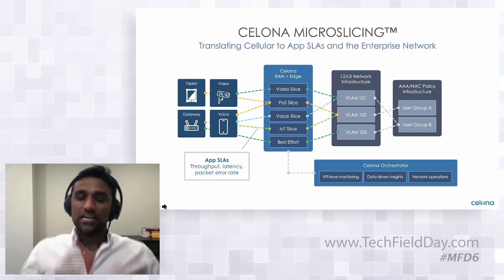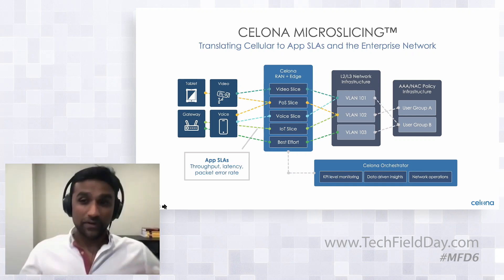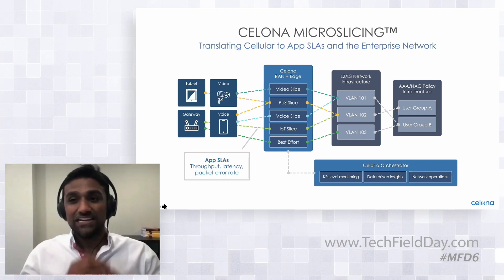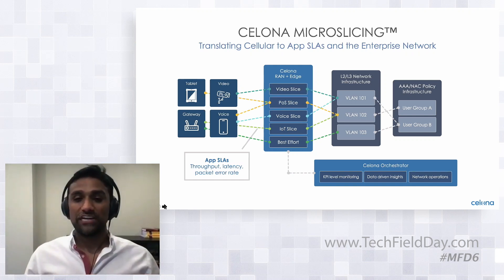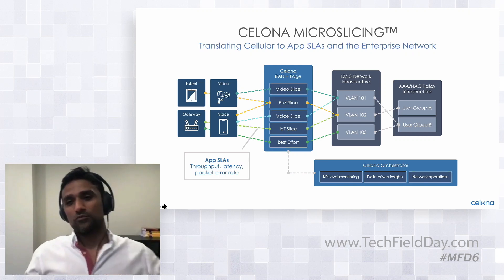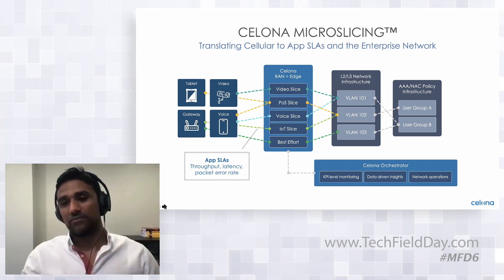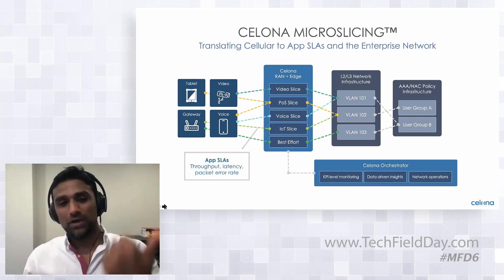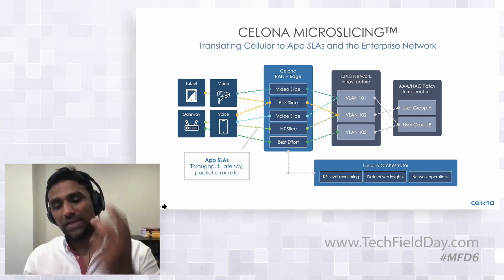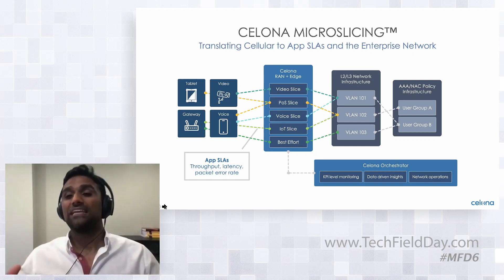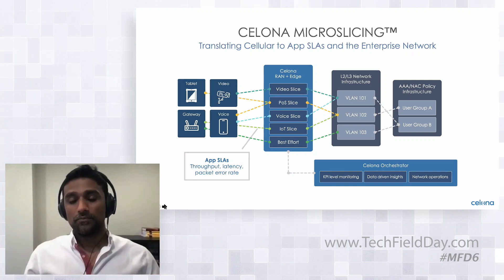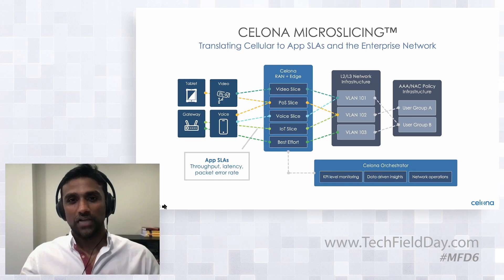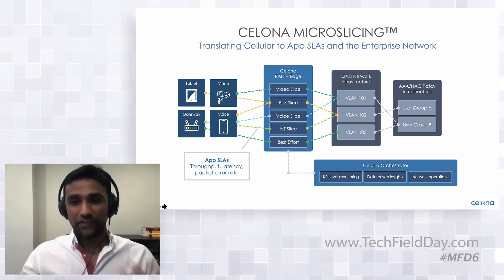You add device groups to that micro slice and specify that any application flow from these devices must adhere to defined SLAs — whether throughput, latency, or packet error rate. The second part of the equation is integration with existing enterprise systems. Enterprises already have cameras running over existing access networks, so micro slicing allows you to plug into existing VLANs and existing segmentation policies. This avoids creating a separate island network, which is where the appeal of micro slicing really resonates with enterprises.